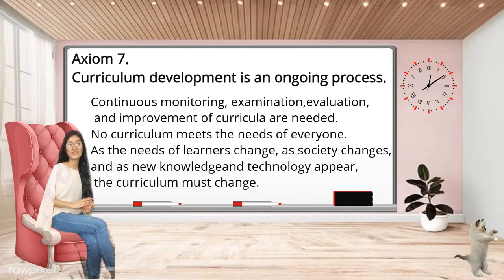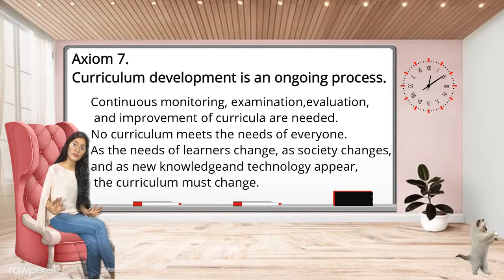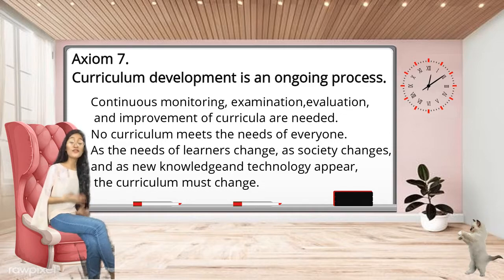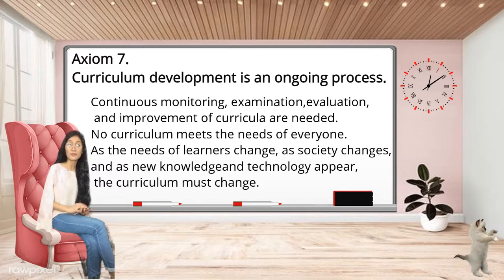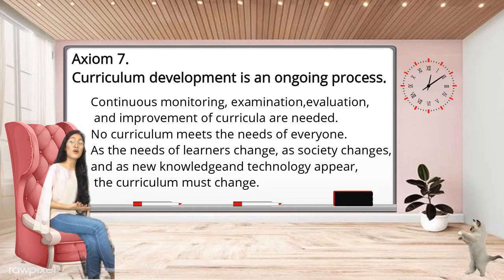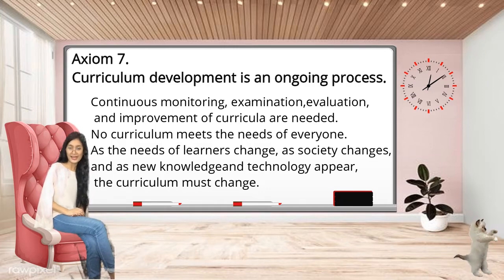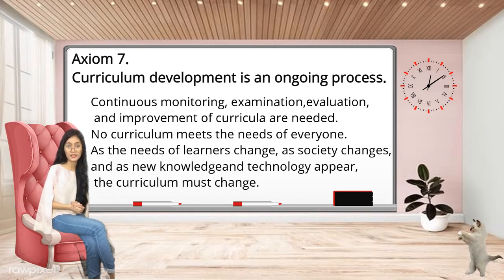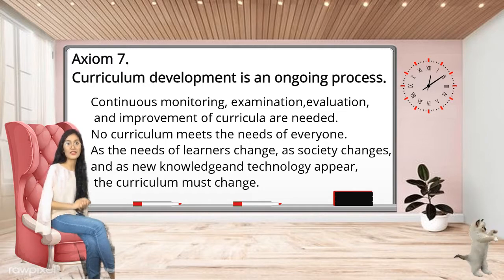Axiom 7: Curriculum development is a continuous process. Curriculum is never completely developed, and no curriculum meets the needs of everyone. As the needs of learners change, as society changes, and as new knowledge and technology appear, the curriculum must change. Therefore, continuous monitoring, examination, evaluation, and improvement of curricula are needed. As the first axiom stated, change is inevitable and things are always changing — therefore, we can say that curriculum is never completely developed.